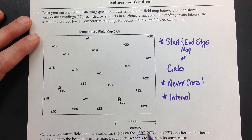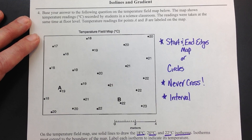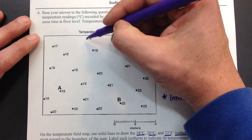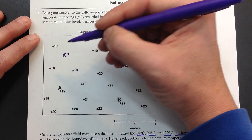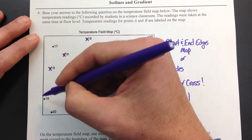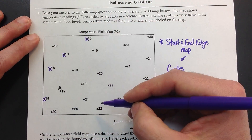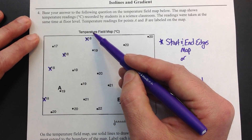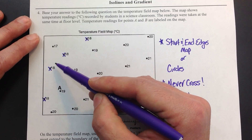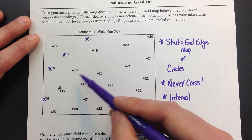Here we're going to do the 18, the 20, and the 22 isotherms — isotherms are equal temperatures. I'm going to start with the 18. What I like to do is X out the values given to me. So there's an 18, an 18, an 18, and an 18. It looks like my 18 line is going to come right down the left side and then off the map.